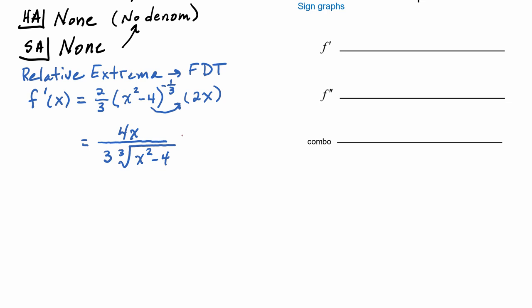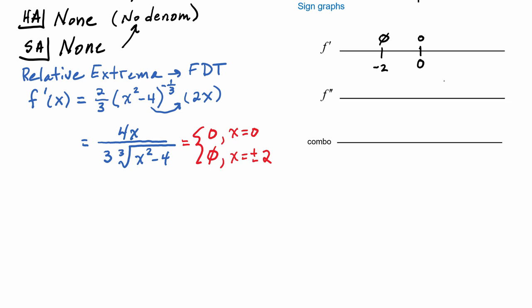We want to know when f'(x) equals zero or does not exist. It equals zero at x = 0, and it does not exist at x = ±2. So all three are critical numbers that go on our sign graph for f'. The derivative is zero at x = 0, and undefined (DNE) at x = -2 and x = 2.